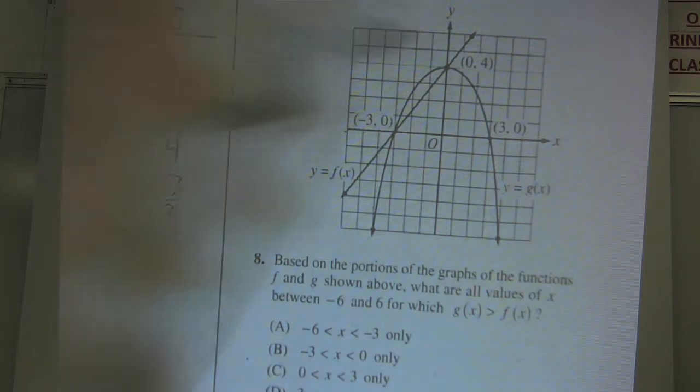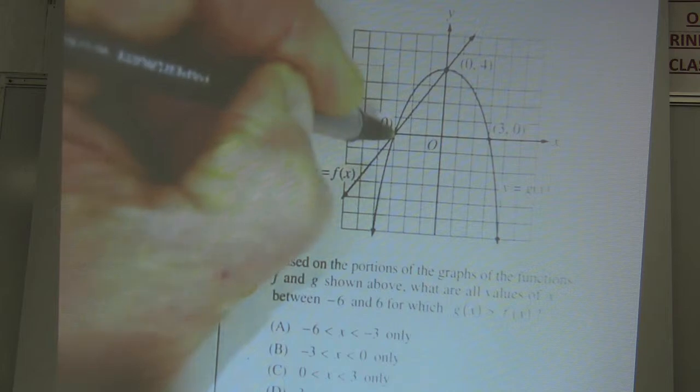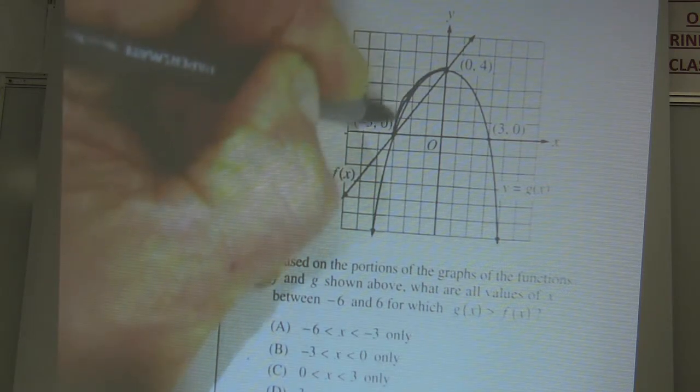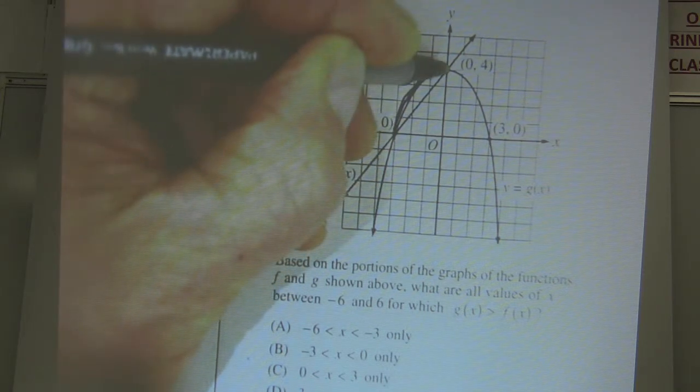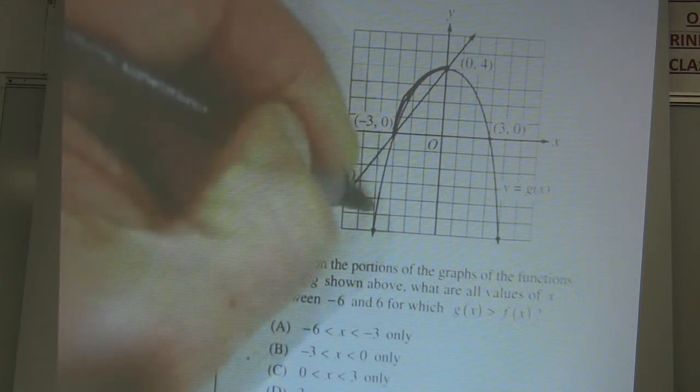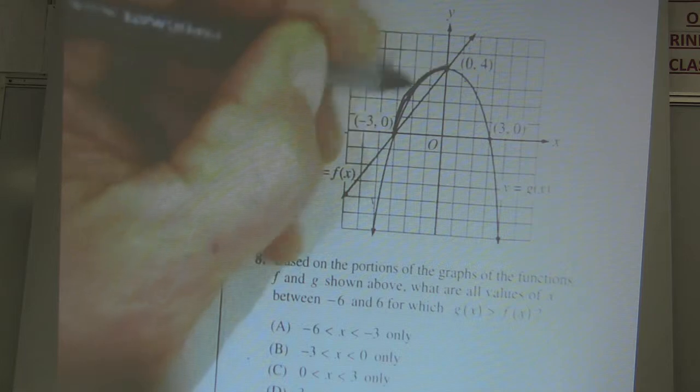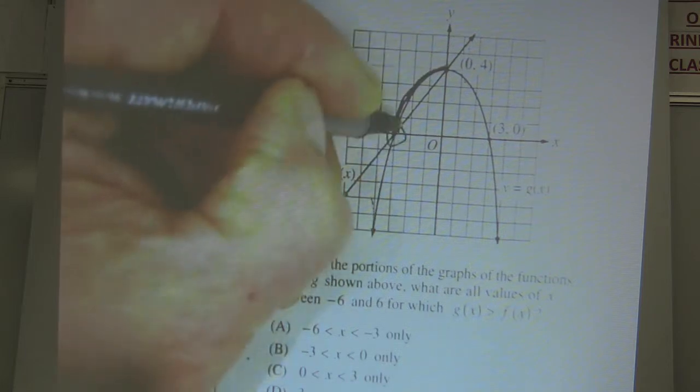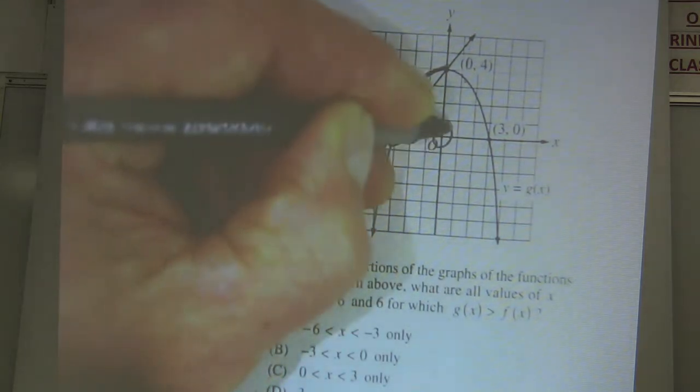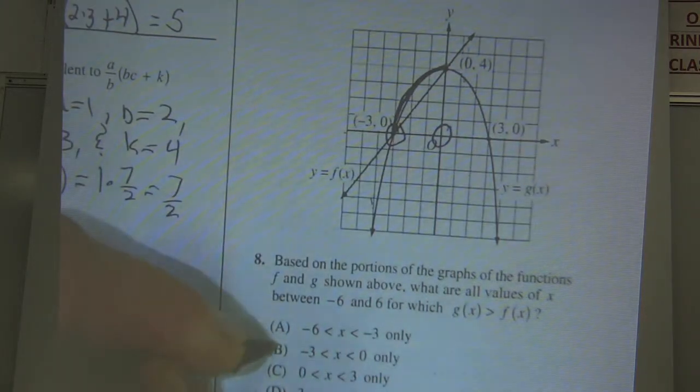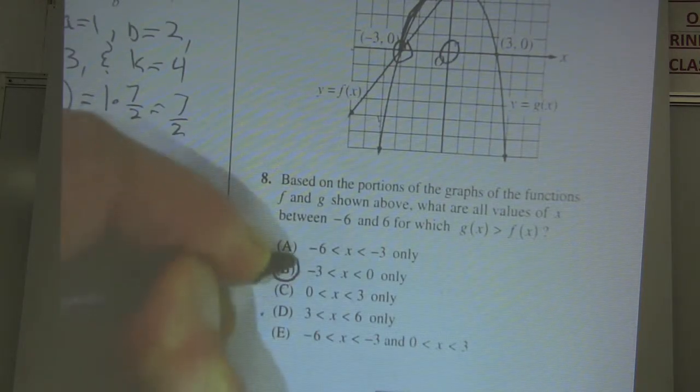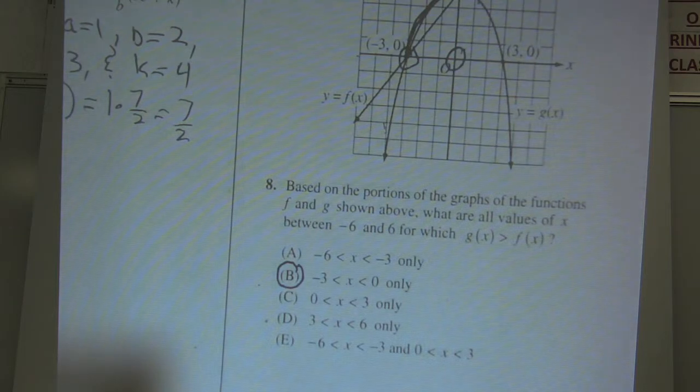g is the parabola. g is on top of f right here. That's the only time it's on top of f. Otherwise the line's on top of the parabola over here and the line's on top of the parabola over here. But right here the parabola is on top of the line. This is x equals negative 3, this is x equals 0, so it's between negative 3 and 0. So it's choice B.